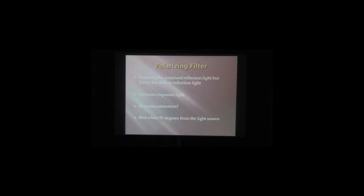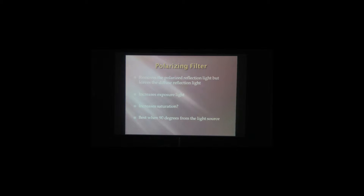A polarizer filter is really just two neutral density filters that you line up at a different angle. The male end threads into your lens and then it has a front part that rotates. These work best when you're shooting 90 degrees from your light source. The rule is: if you point towards your light source and hold your thumb out, any angle with your thumb is where the polarizer is going to work best. Which makes sense because it's a direct reflection — if you're not 90 degrees from the light source, you're probably not getting a true polarized reflection.